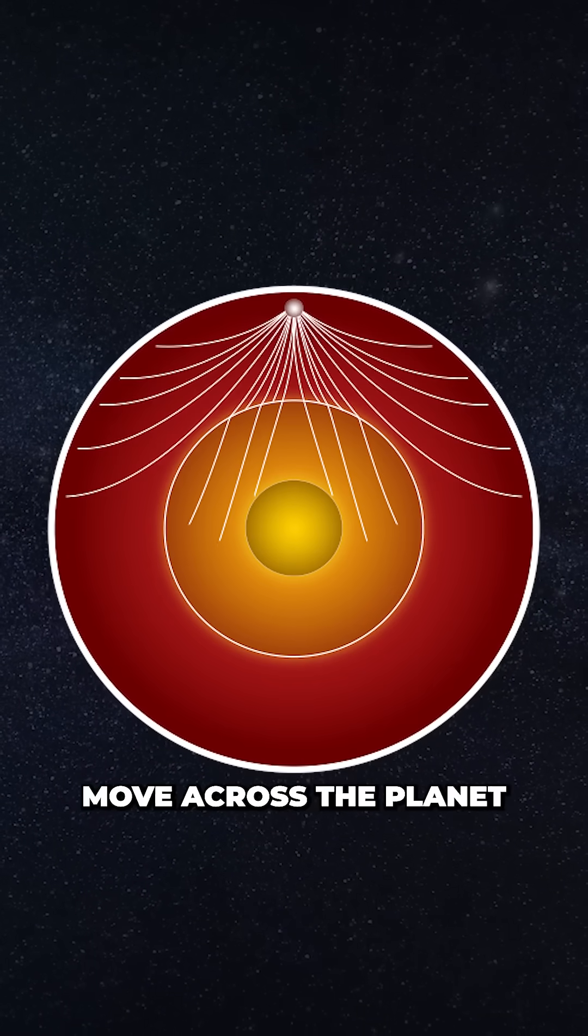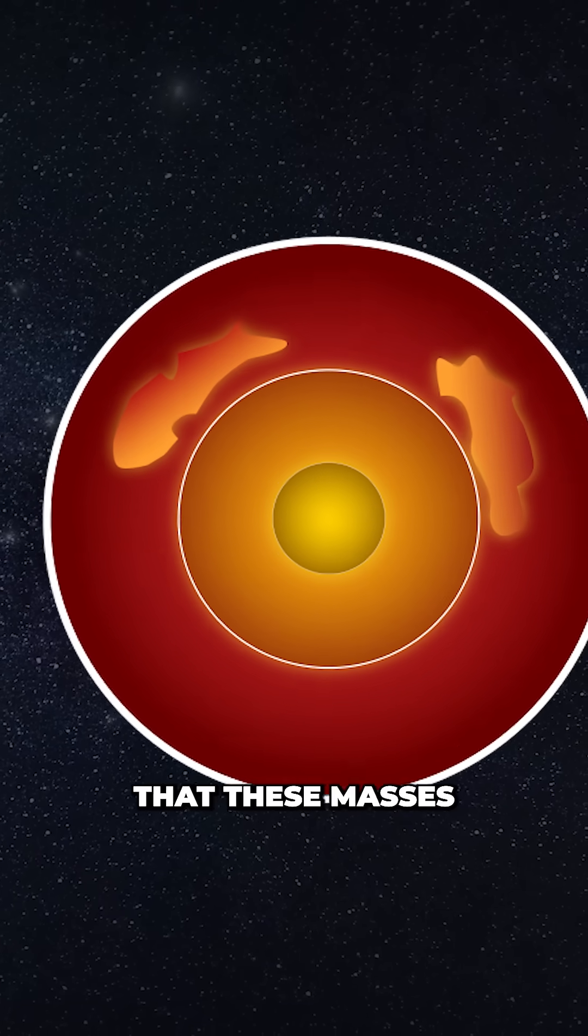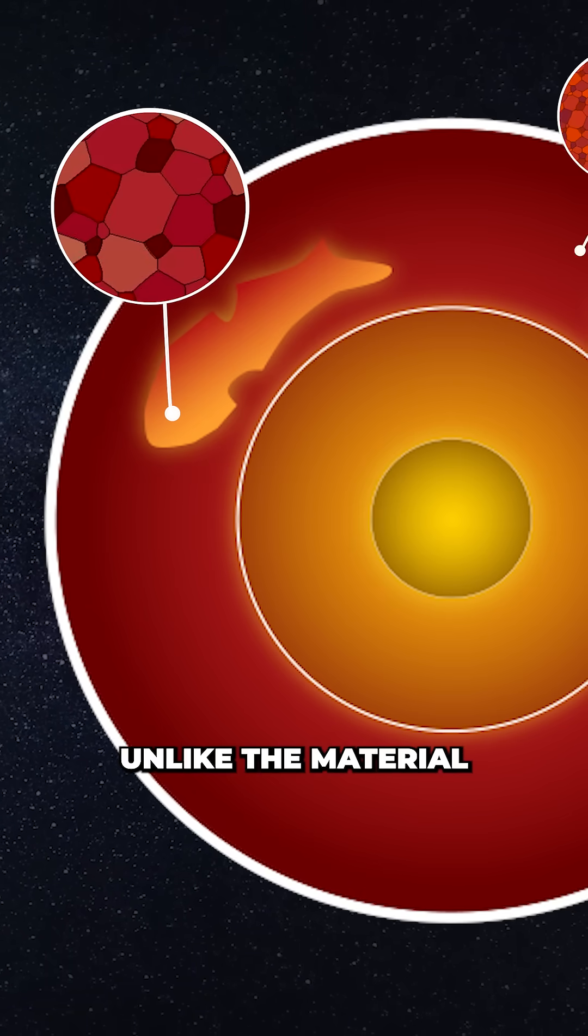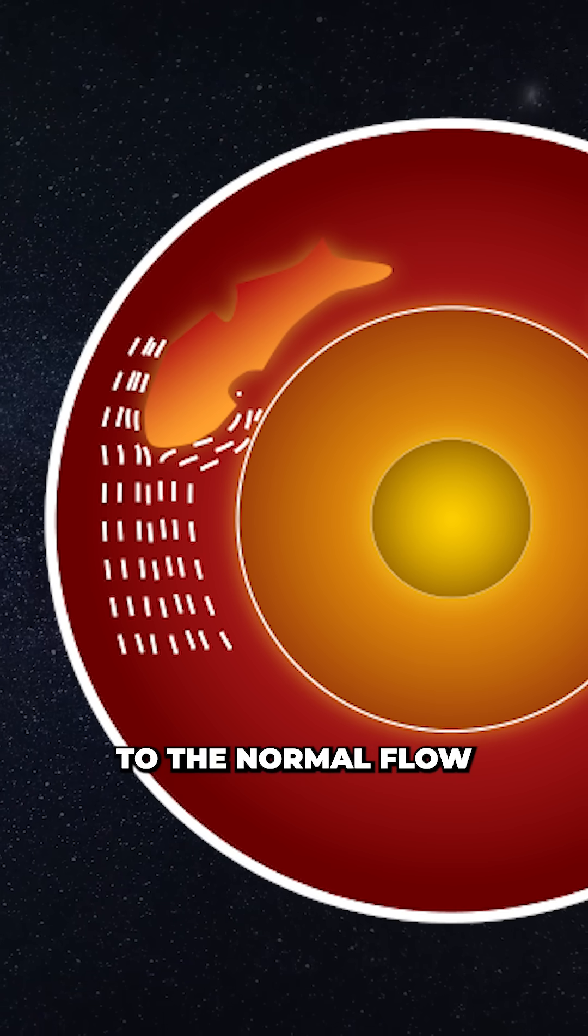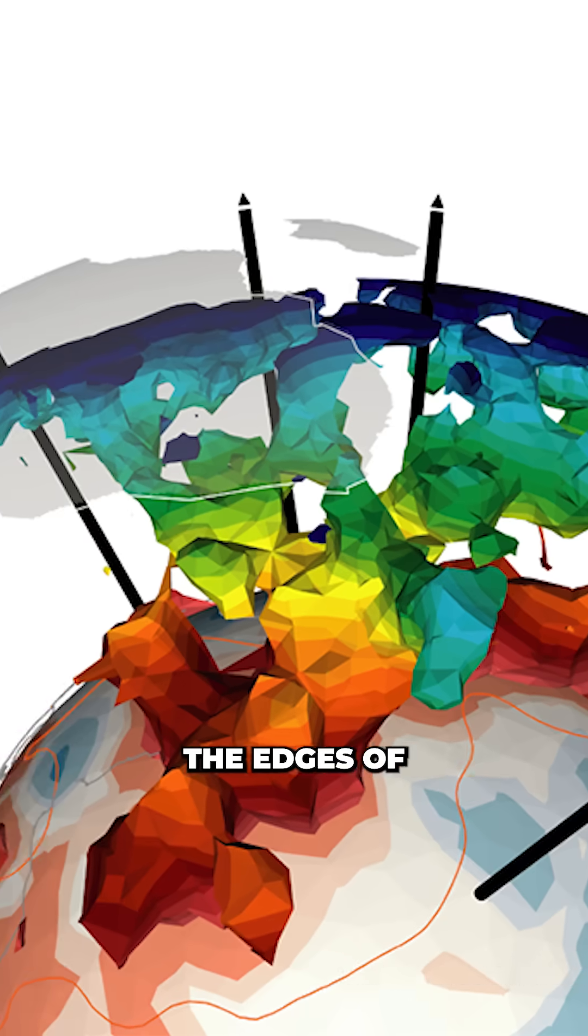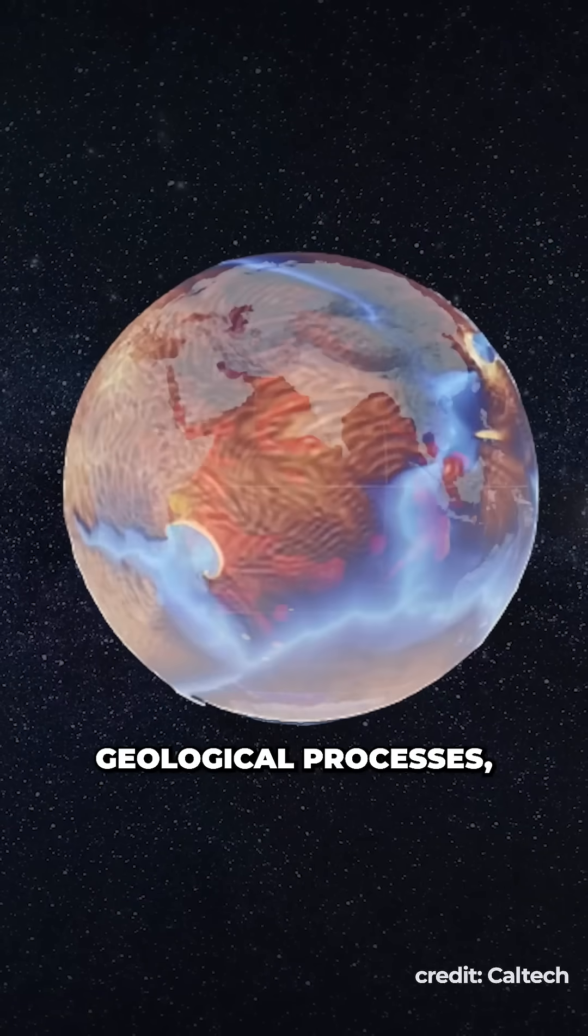By analyzing how vibrations move across the planet in the wake of large earthquakes, researchers just discovered that these masses have large mineral grains, unlike the material surrounding them, making them rigid and resistant to the normal flow of mantle material. The edges of these colossal structures may also play a crucial role in Earth's geological processes,